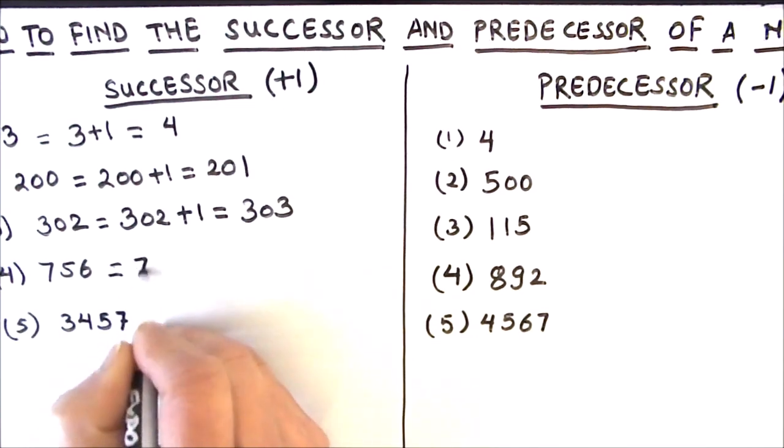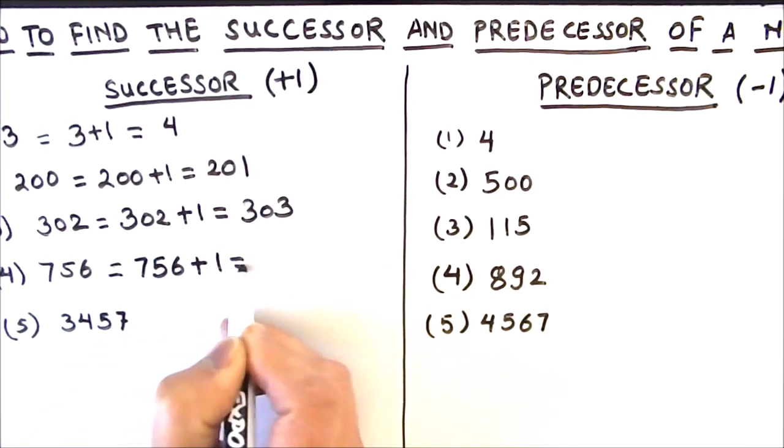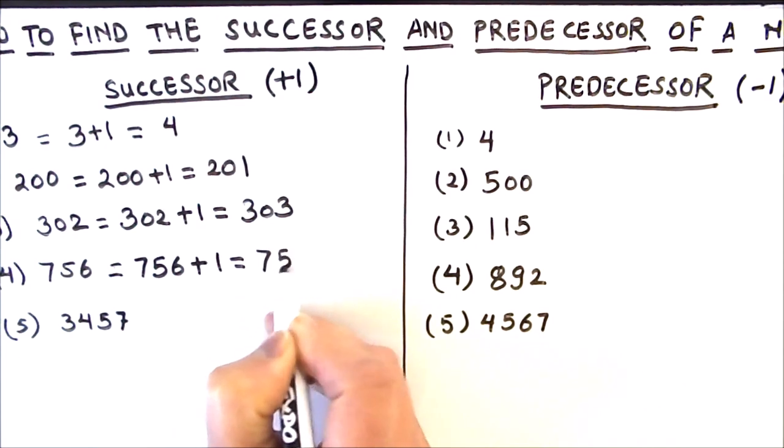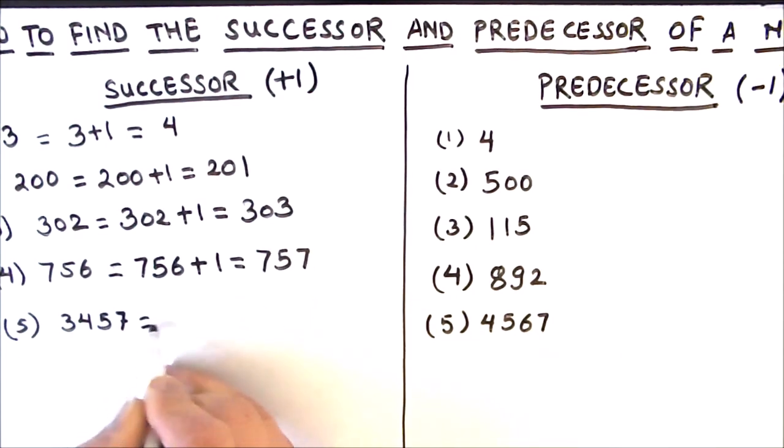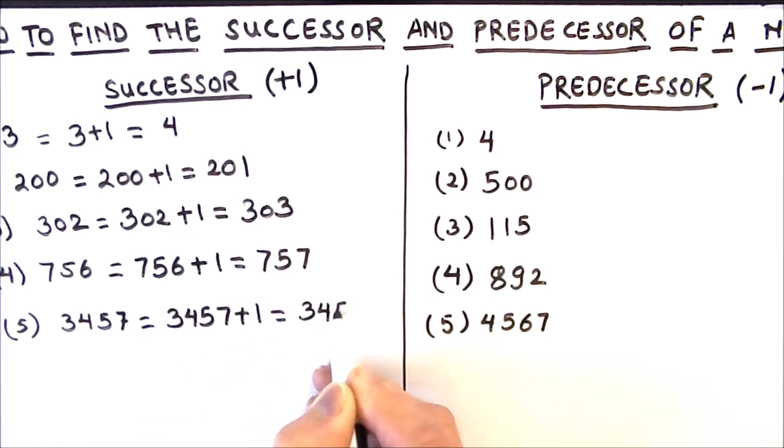Successor of 302 is 303. Next we have 756, successor of 756 is 757.